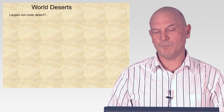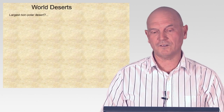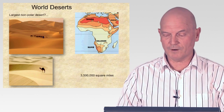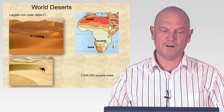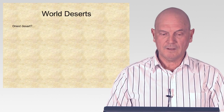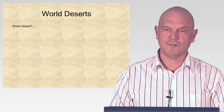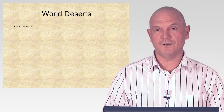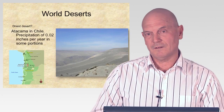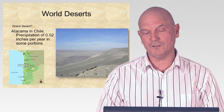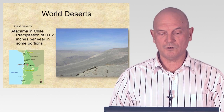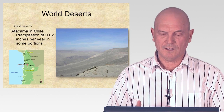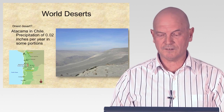What's the largest non-polar or hot desert? You'd probably say the Sahara — and that's correct. It's 3.5 million square miles. And the driest desert? There's some controversy, as the Gobi and several hot deserts are very dry, but we'll say the Atacama Desert in Chile is the driest, with precipitation of only 0.02 inches per year.